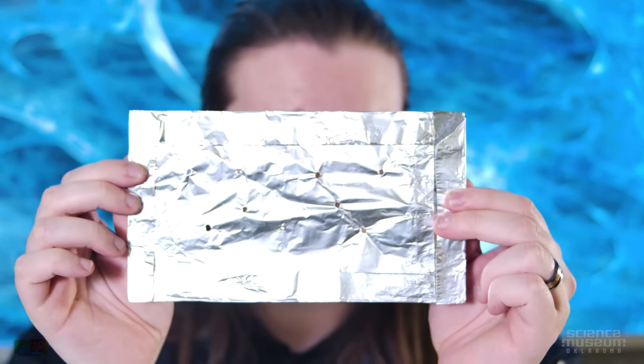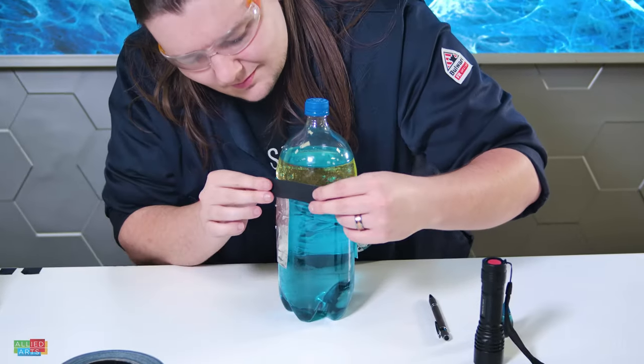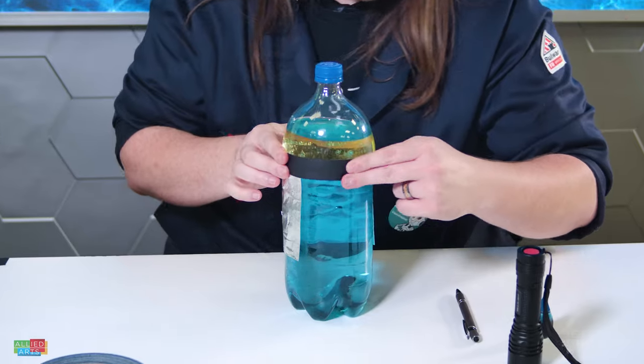Now, take the aluminum foil to the bottle so it hugs the smooth side of the bottle. Finally, give the bottle a good shake and shine your flashlight through the foil and investigate the bottle.